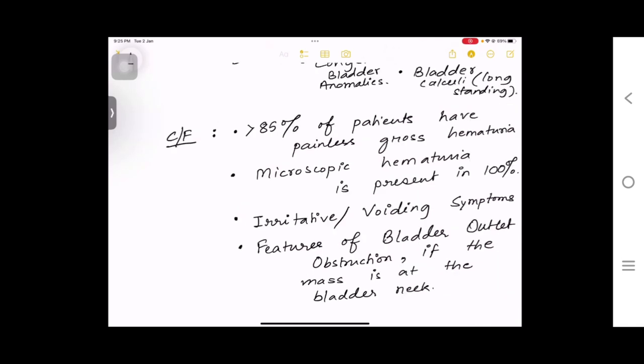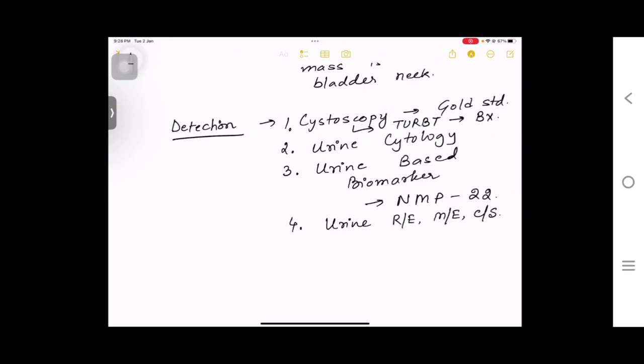Urinary bladder cancer is one of the causes of painless gross hematuria. Second, there will be irritative voiding symptoms. Third, there can be features of bladder outlet obstruction if the mass or tumorous mass is at the neck of the bladder.